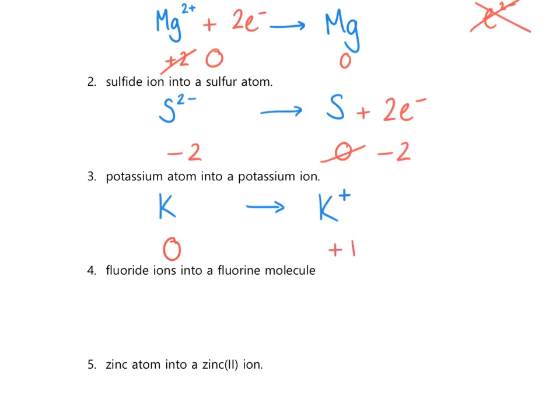On the right hand side the charge is plus 1. Now we add our electrons to the side that needs to come down in charge — this time that's the right hand side. How many do we need? The charge is plus 1 and on the other side it's zero, so it only needs to come down by one. Therefore we only need one electron. And don't put a number one in front of it — in equations and formulas we don't use number ones.